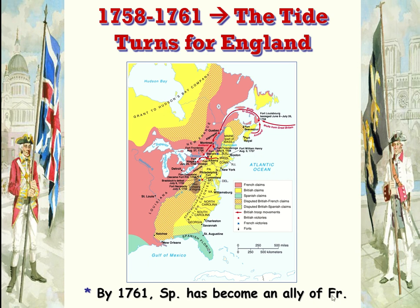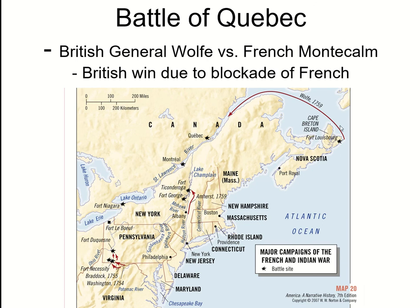Spain will become an ally of France because nobody likes England, though they're not really sending any troops. Here's the Battle of Quebec. We're going to see the cutting off of supplies from the map. British General Wolfe is important here. The British are going to blockade the French and then attack Quebec. A blockade is a series of boats blocking an entrance or body of water. The French were bringing supplies through the St. Lawrence River down to Quebec and then Montreal — by cutting that off, General Wolfe is going to have a blockade past Nova Scotia so no supplies can come in, then sail in to attack Quebec.